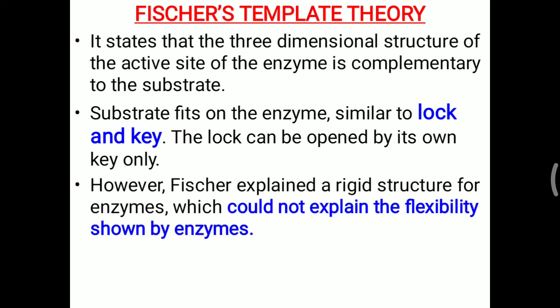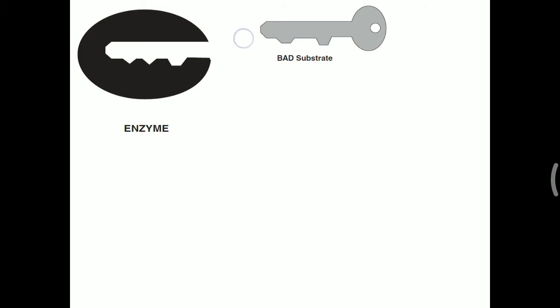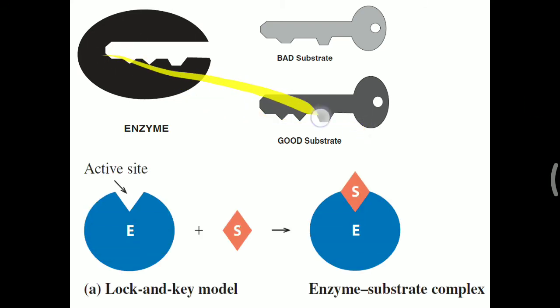Fischer's model describes a rigid structure for the enzyme, which could not explain the flexibility shown by the enzyme. When there is attachment of the substrate, some three-dimensional structural changes occur in the enzyme, and those changes are not explained by this theory. However, it does explain how a particular substrate attaches to the enzyme: the enzyme acts as a lock with a particular three-dimensional structure; only a substrate with the matching structure can attach and be converted into product. This is also known as the lock and key theory.